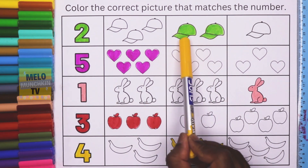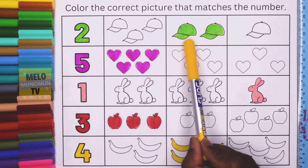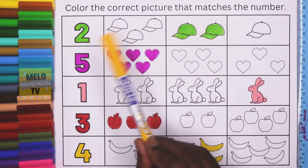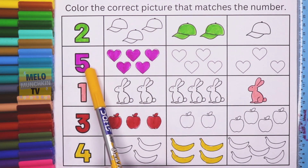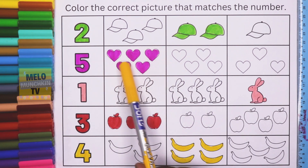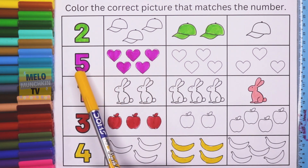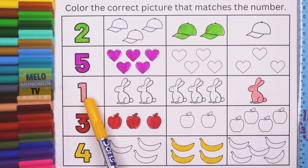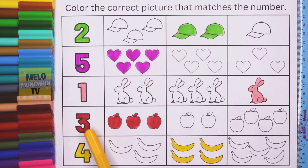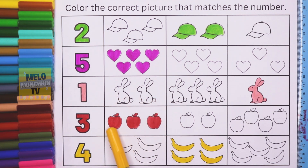We have colored all the pictures that match the numbers. Number 2 — 2 caps in green color. Number 5 — 5 hearts in dark pink color. Number 1 — 1 rabbit in light pink color. Number 3 — 3 apples in red color: 1, 2, and 3. Number 4 — 4 bananas in yellow color.